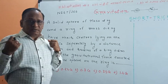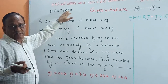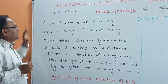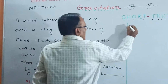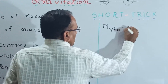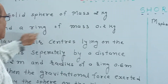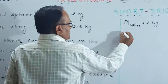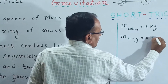Here I present the best example of gravitation for NEET and JEE 2009 — it is a new concept. A solid sphere of mass M equal to 2 kg is given, and a ring of mass 0.2 kg is also given.